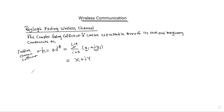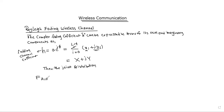Now I will ask about the joint distribution function. The joint distribution f(a, φ) is equal to (a/π)·e^(−a²).